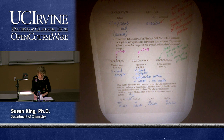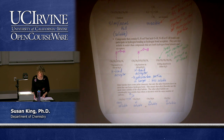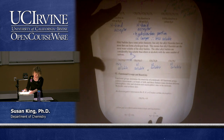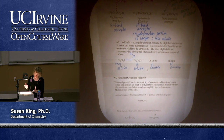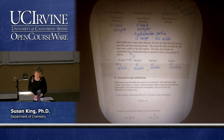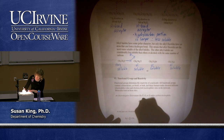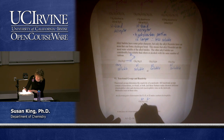I want to skip a couple of pages and come back to them on Wednesday — applications and biomolecules won't be on the midterm. What I am testing is functional groups and reactivity. We've mostly talked about this already. Functional groups determine the reactivity of a molecule; all functional groups contain a heteroatom, a pi bond, or both. These features create electron-deficient electrophilic carbons and electron-rich nucleophilic sites. An electronegative heteroatom like nitrogen, oxygen, or a halogen makes the adjacent carbon electrophilic because the bond is polarized in that direction.